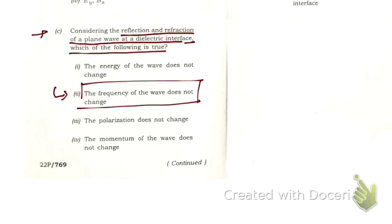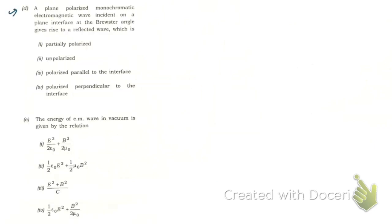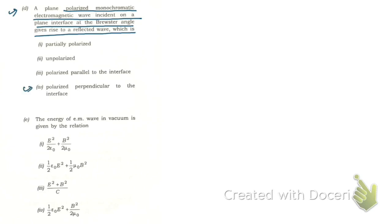Question 1d: a plane polarized monochromatic electromagnetic wave incident on a plane interface at Brewster's angle gives rise to a reflected wave which is — the correct answer is option 4: polarized perpendicular to the interface.